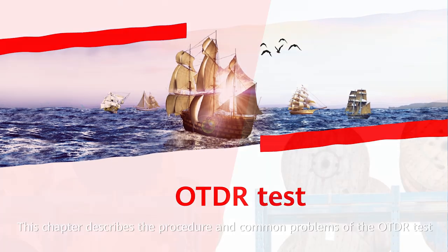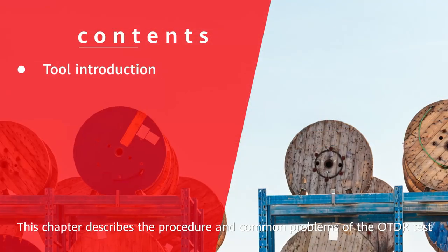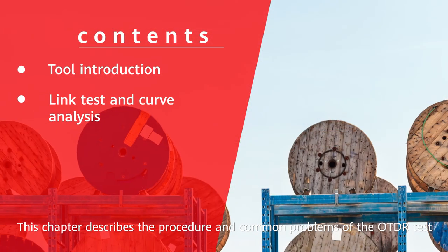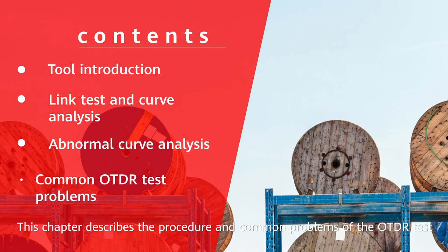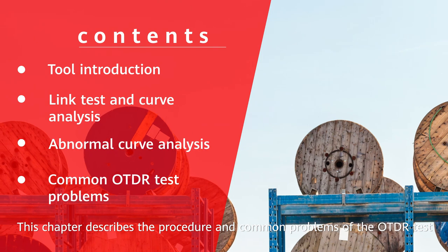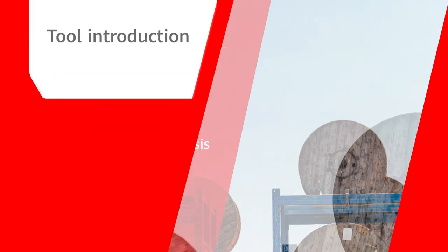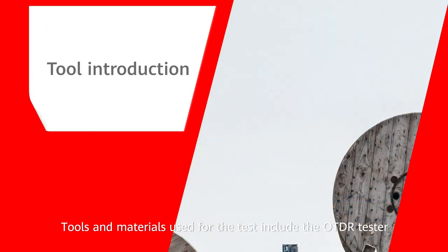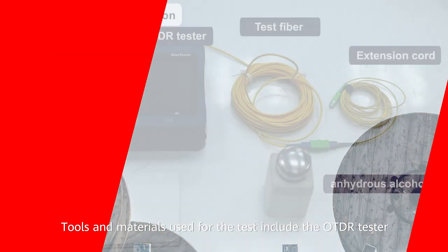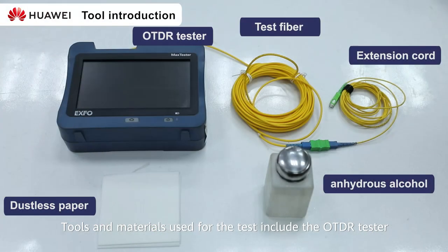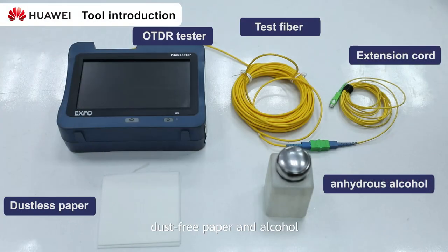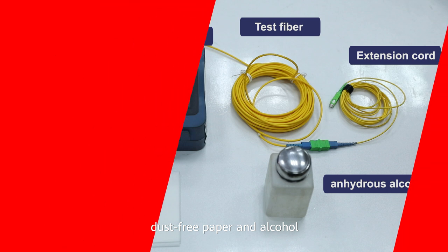This chapter describes the procedure and common problems of the OTDR test. Tools and materials used for the test include the OTDR tester, test fiber, dust-free paper and alcohol.